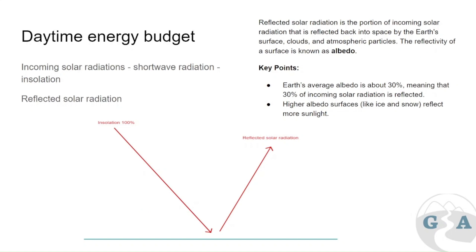In the daytime energy budget, the first thing is that some radiation that reaches the surface is actually reflected — it doesn't heat up the surface, it just reflects back out to space. This is reflected solar radiation. The action of reflecting off a surface is known as albedo. The albedo effect differs on different surfaces — it might be very low in a place with low reflectivity, like over dark soil.